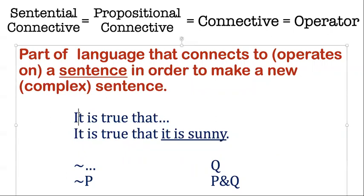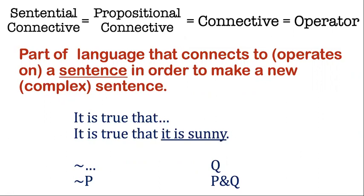For example, "it is true that" is not one of the Boolean connectives, but it does count as a connective. There's a gap, and we can insert a grammatically formed whole sentence like "it is sunny," and we get a new complex sentence: "It is true that it is sunny." That same test works for Bool — inserting an atomic sentence like p makes a well-formed sentence. Ditto for conjunction: inserting things here and here gives a complex sentence like p and q.